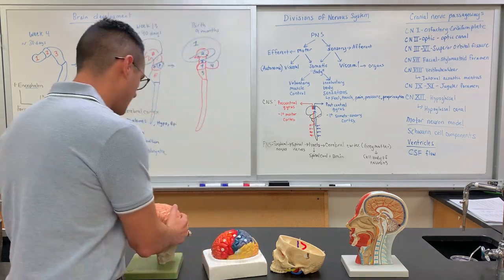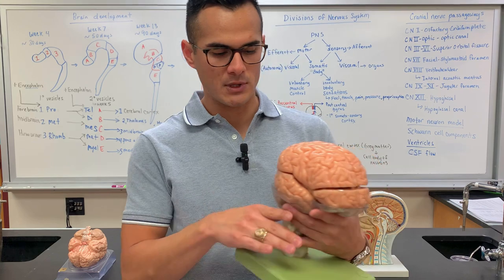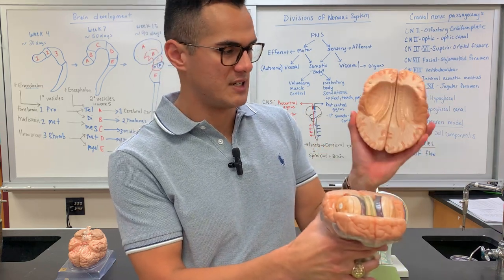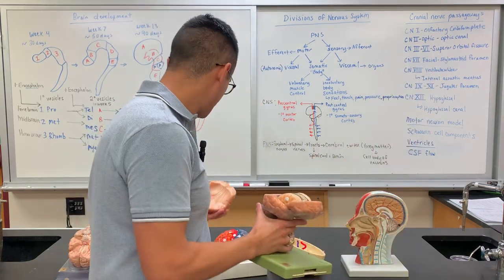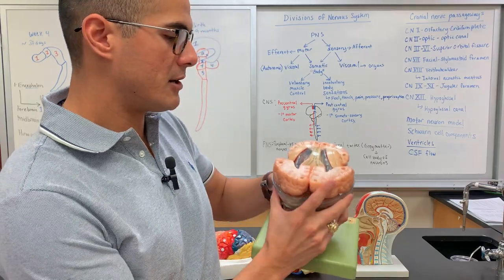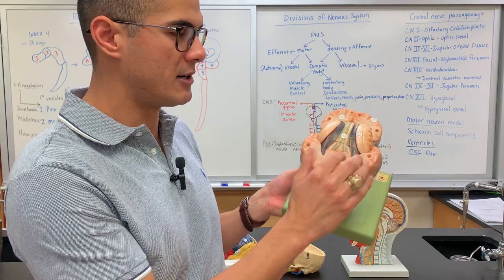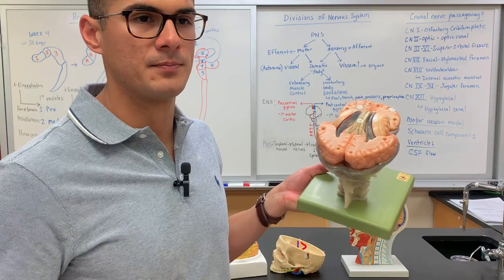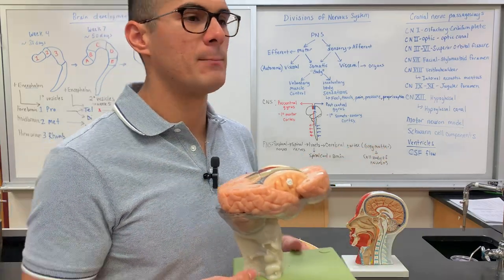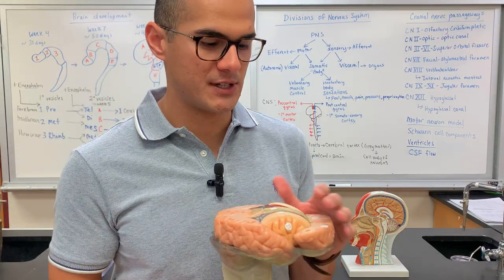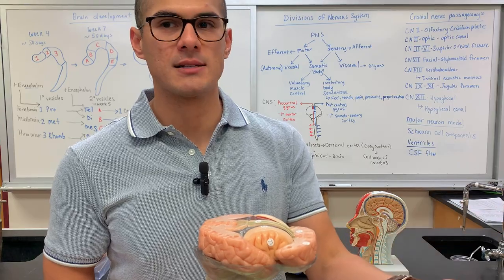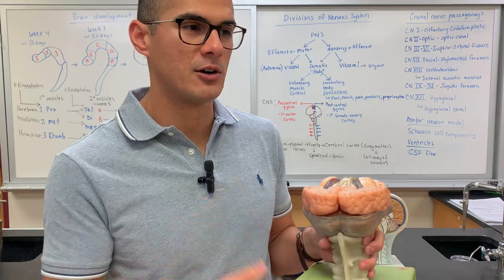Now we're moving to the detachable brain model. You can see white matter and gray matter within the brain. The white matter is on the inside, and the gray matter is on the outside. What makes white matter white is the myelin sheath that wraps around the axons. Bundles of myelinated axons within the central nervous system are called tracts. Tracts are found here and also in the spinal cord.